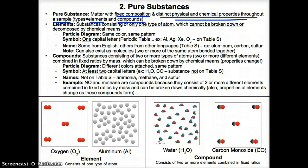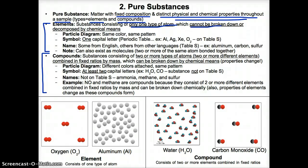The two types of substances are elements and compounds. Elements are substances that have only one type of atom, so elements are the simplest kind of matter. And since they're the simplest kind of matter, elements cannot be broken down or decomposed by chemical means, because they only have one type of atom — or sometimes one type of molecule — and they cannot be simplified further by chemical means.